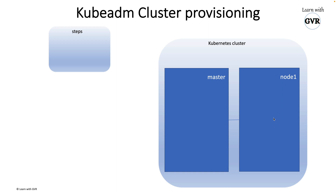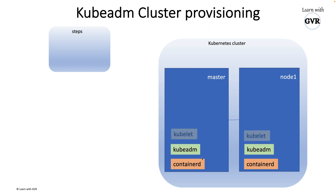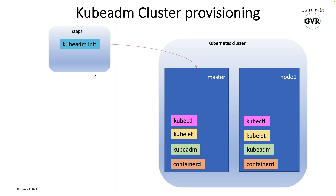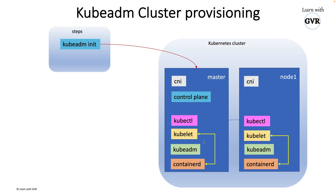For a kubeADM cluster with one master and one worker node, first I will install containerd on both machines, then kubeADM, then kubelet — I will install both on both machines — then kubectl as well. Then I will trigger kubeADM init, which will create control plane components only in the master node. After that, I will install CNI on both the worker node and master node.